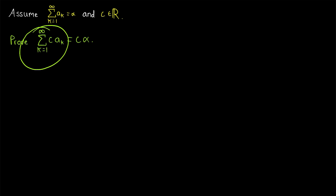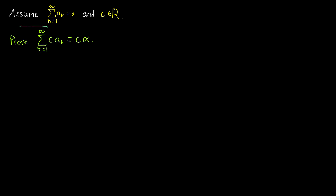For example, the first term of this series would be c times a1, the second term would be c times a2, the third term would be c times a3, and so on. Our proof of this will be quite similar to the previous proofs we did for the series sum law and the series difference law.